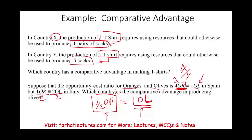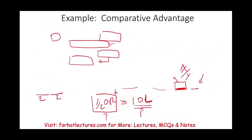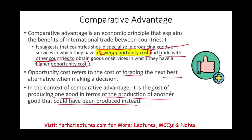There is much more detailed calculation involved in comparative advantage, but for the CPA exam the key concept is: comparative advantage means you produce something using your resources where your opportunity cost is lowest. Produce what has the lower opportunity cost — that's what you should specialize in.